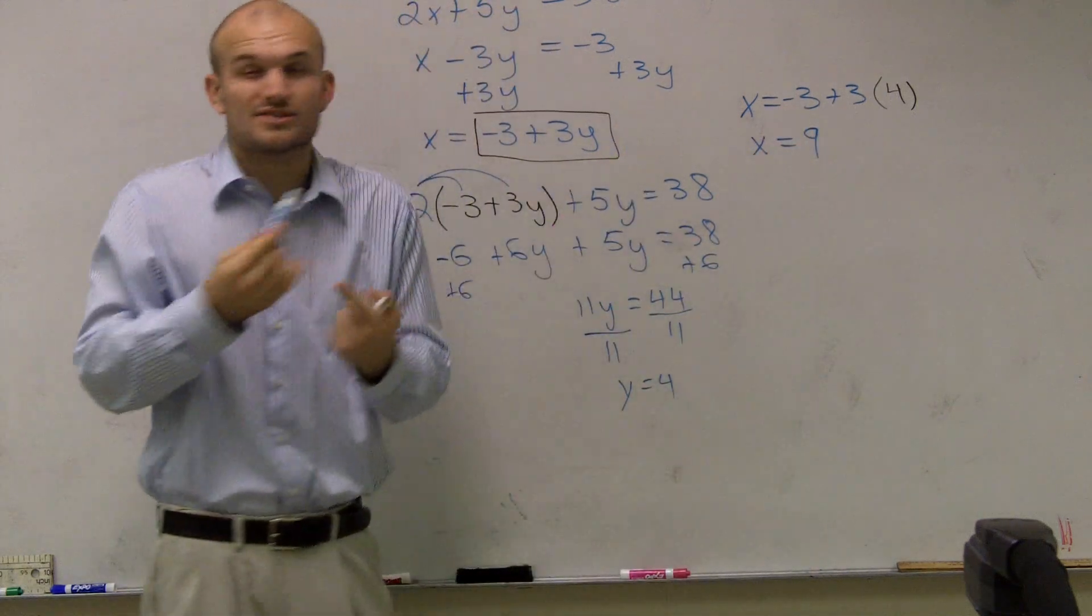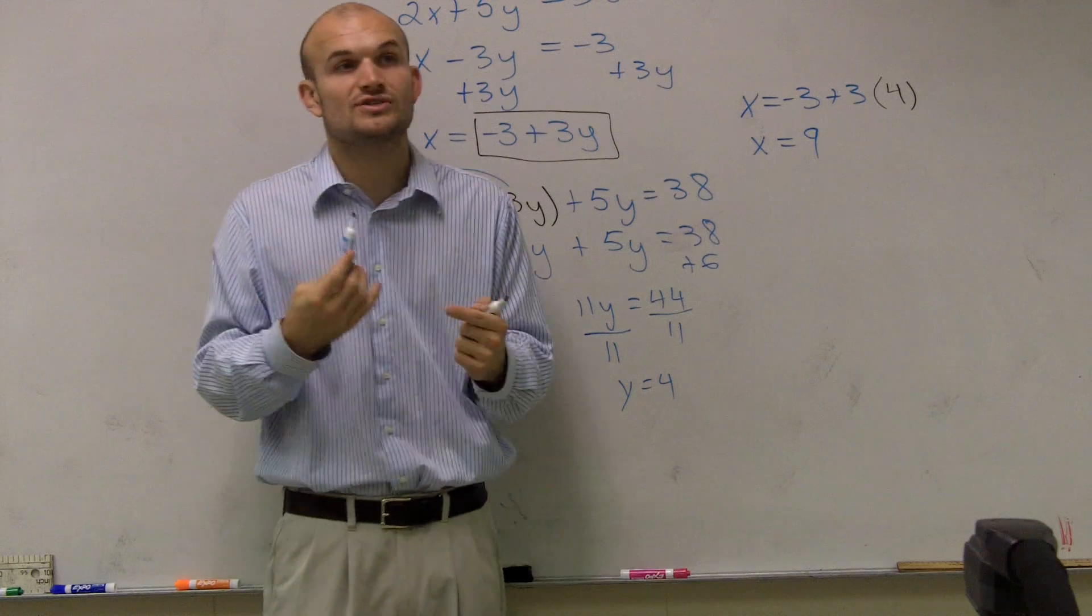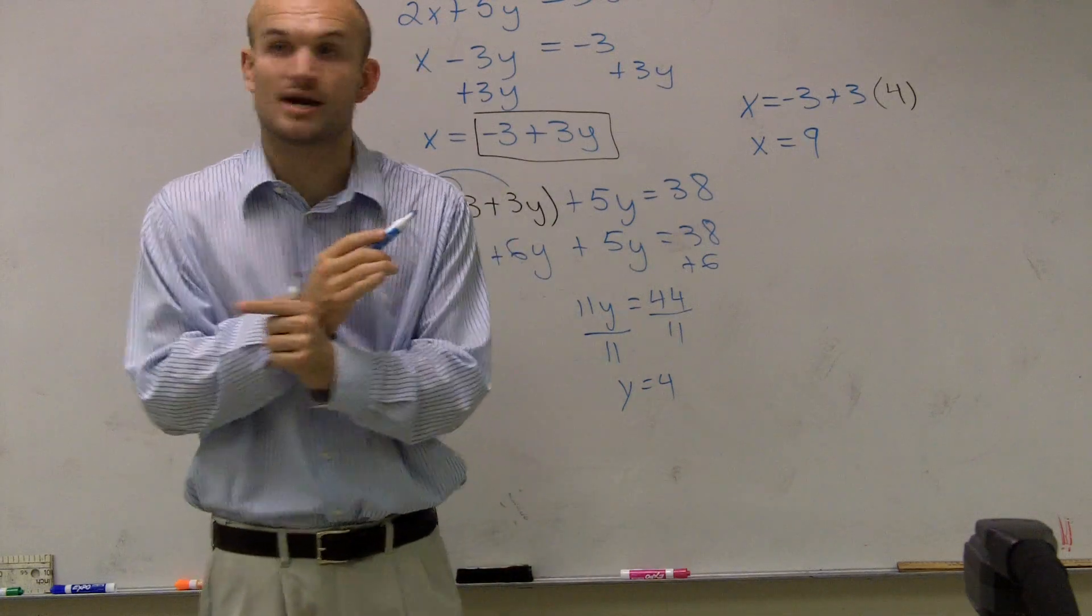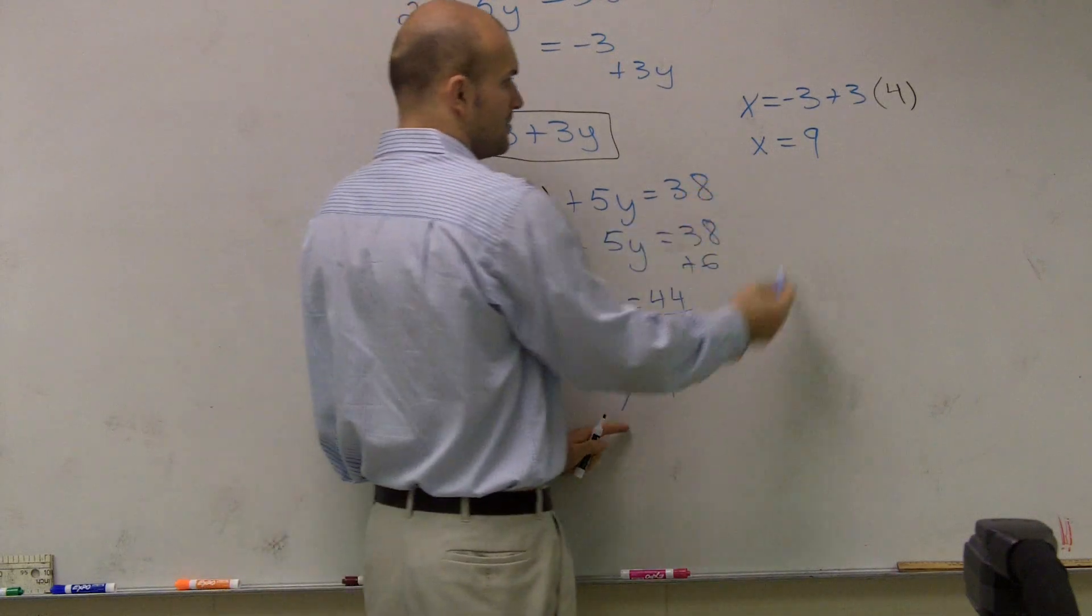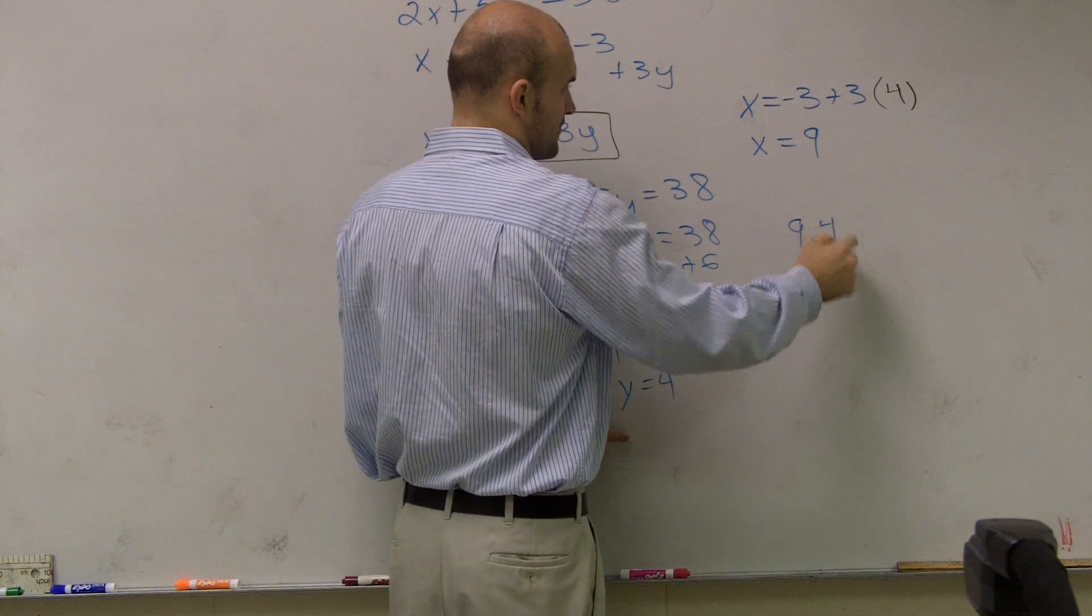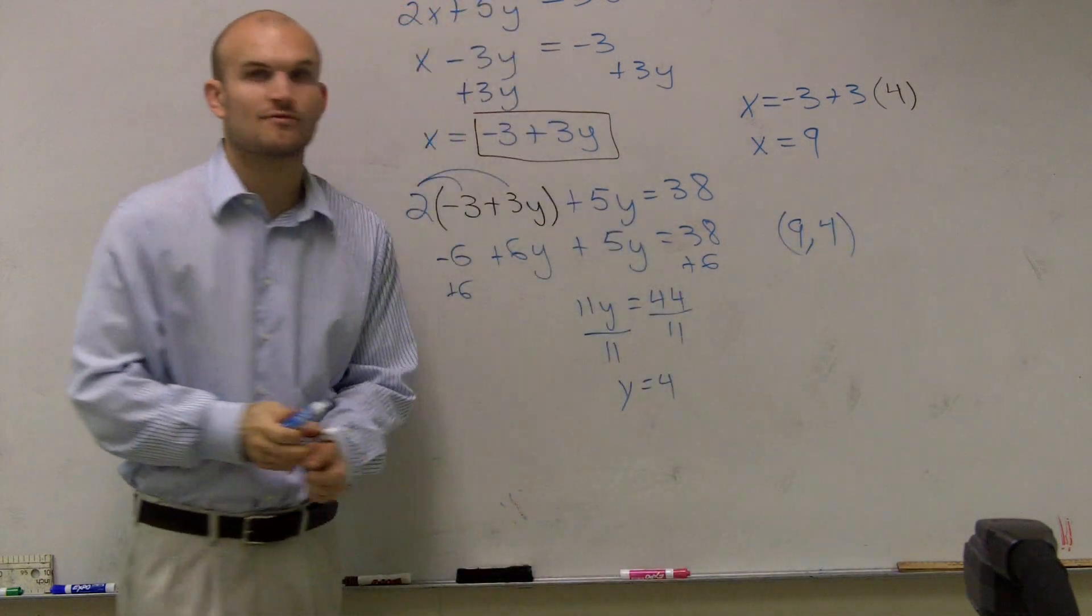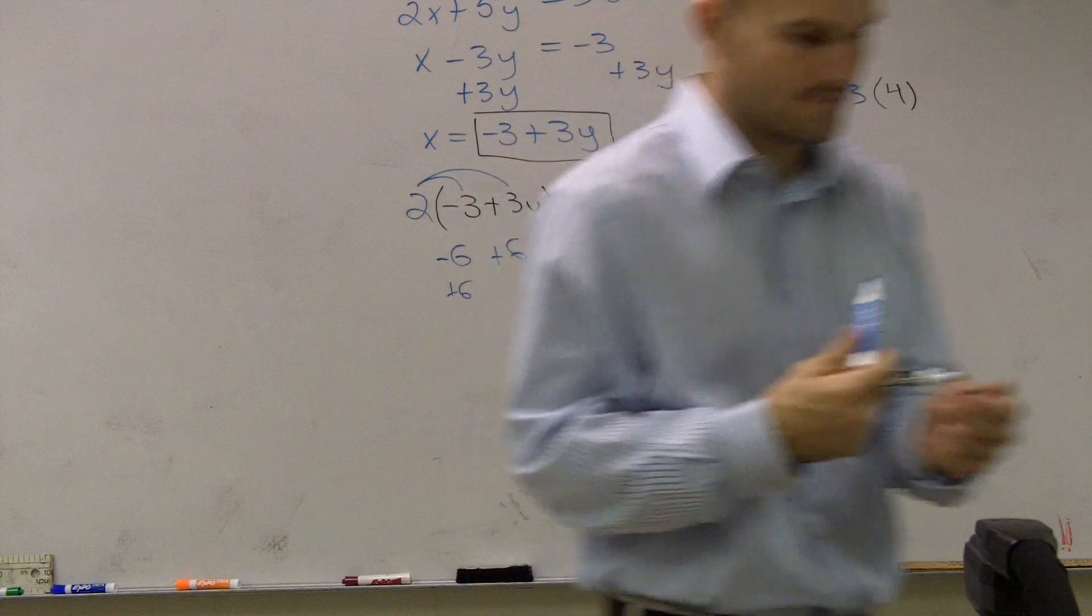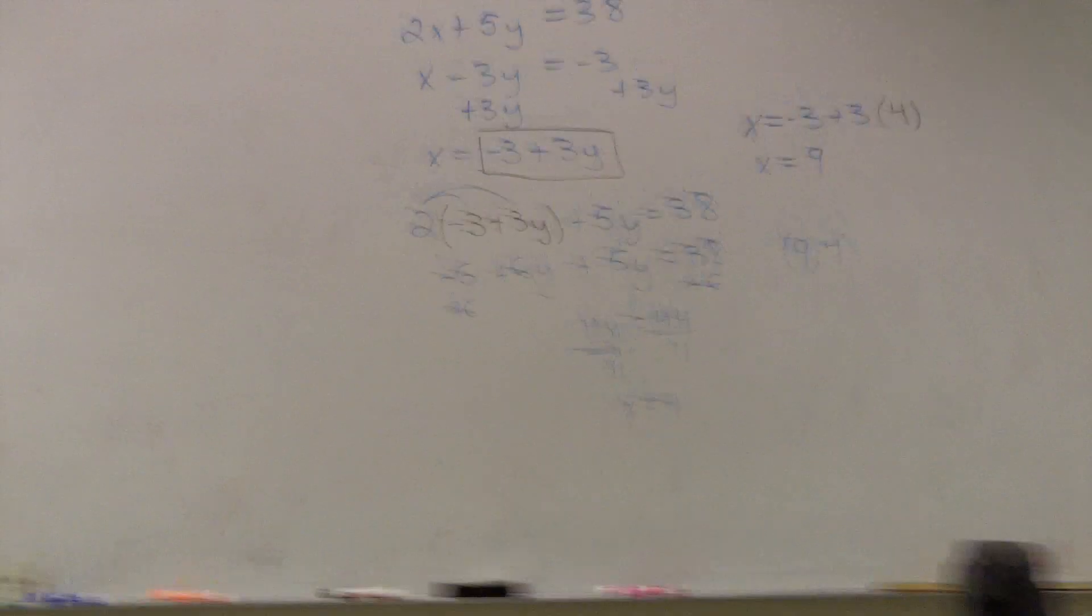So remember, a substitution is telling us where our two systems intersect, what point they share. And since they share exactly one point, I can write it as a coordinate point, which is 9 comma 4. All right? That's it. Actually, I understood that. Good.